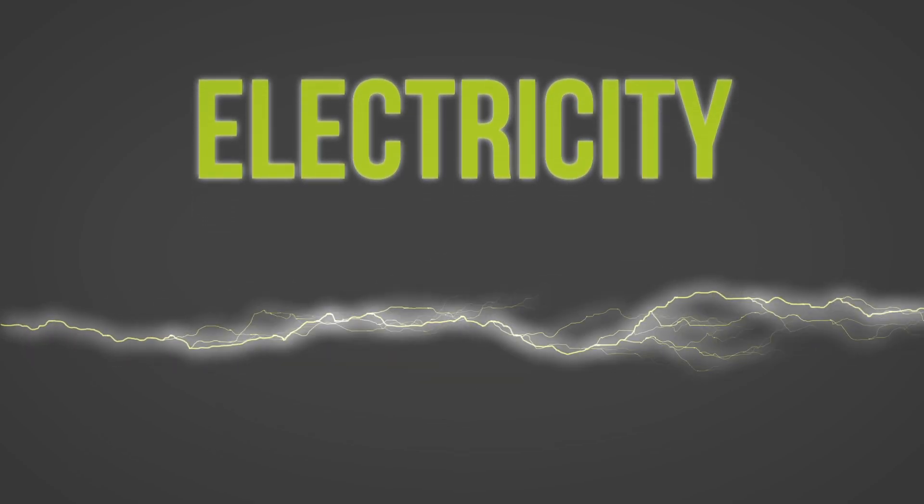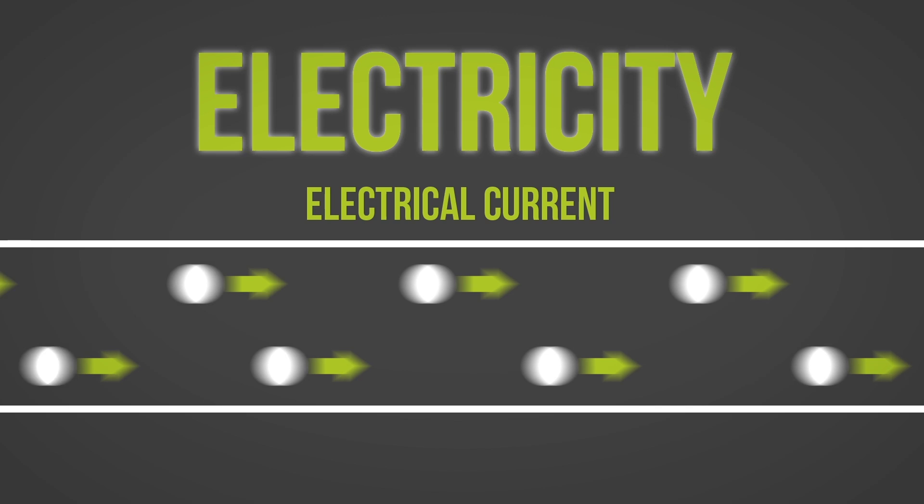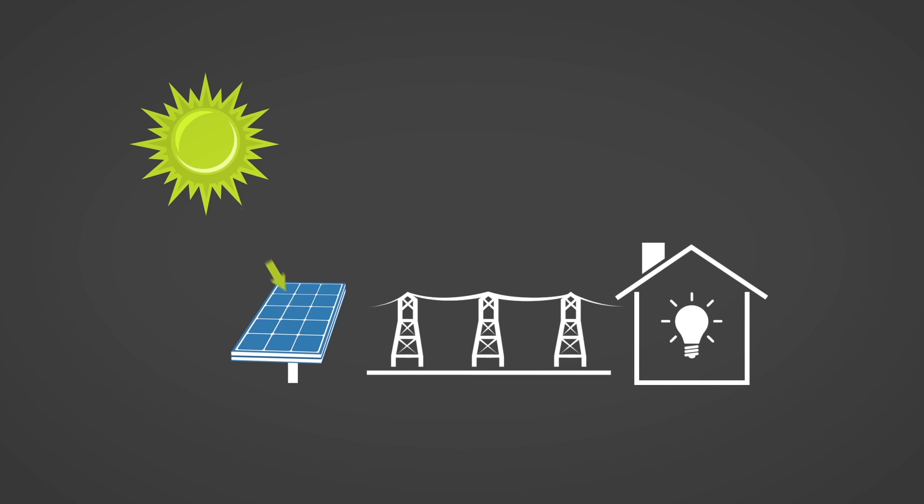Electricity. Electricity is the physical flow of electrons, referred to as an electrical current. Electricity is an energy carrier that efficiently delivers the energy found in primary sources to end users who in turn convert it into energy services.